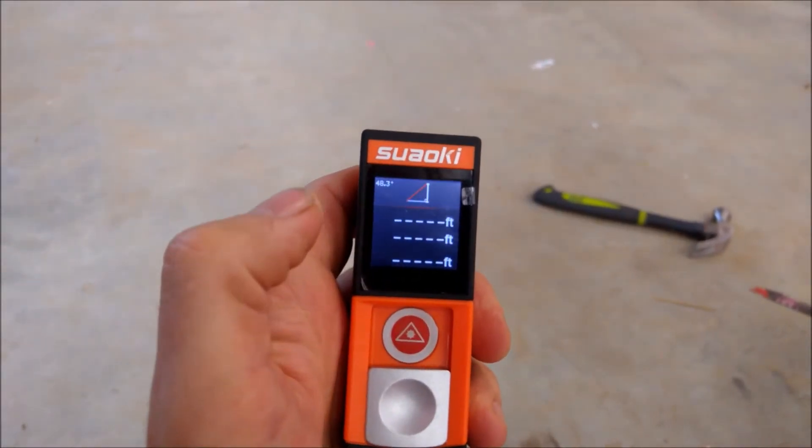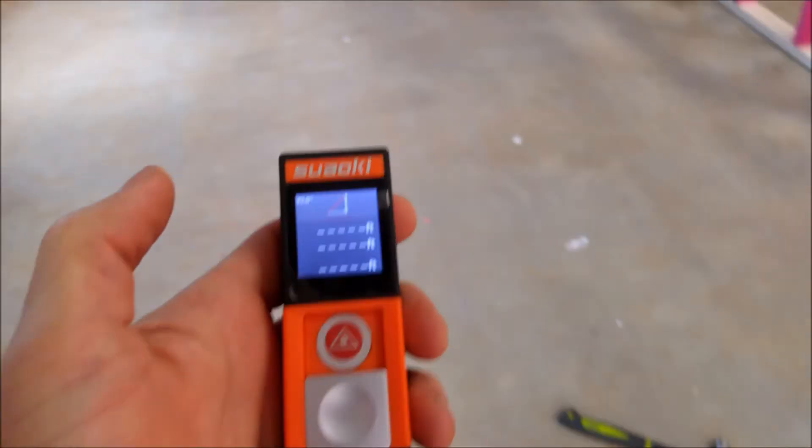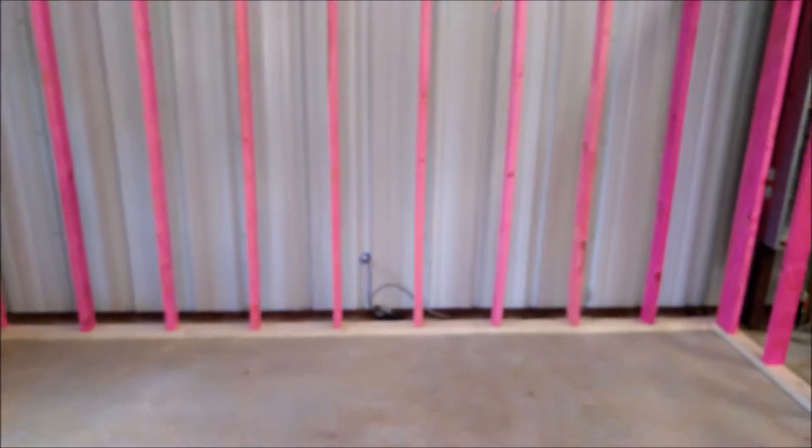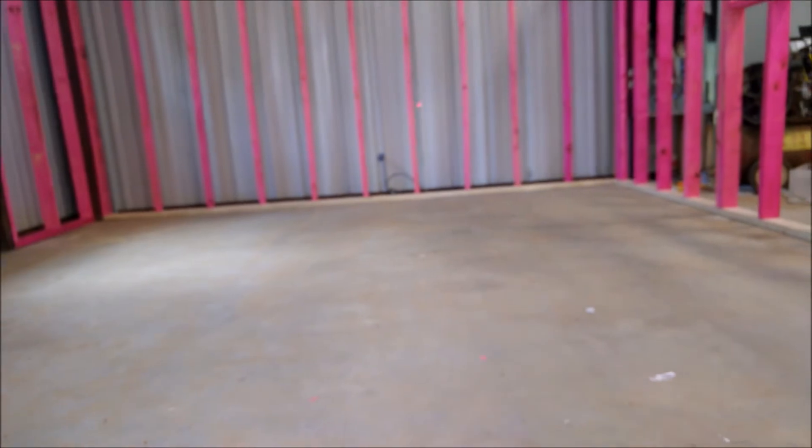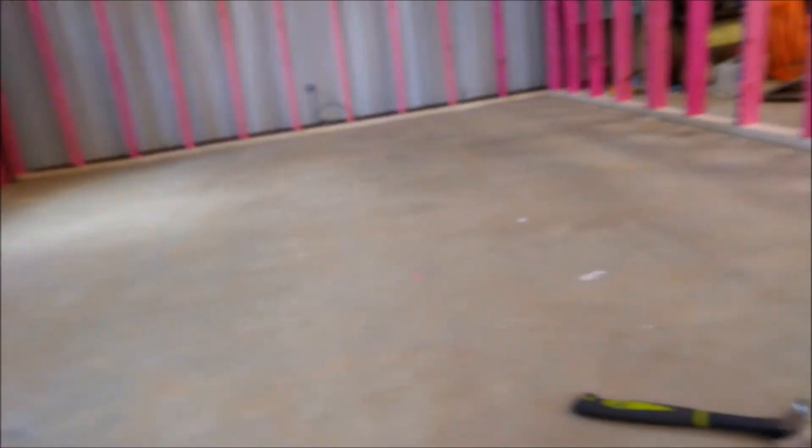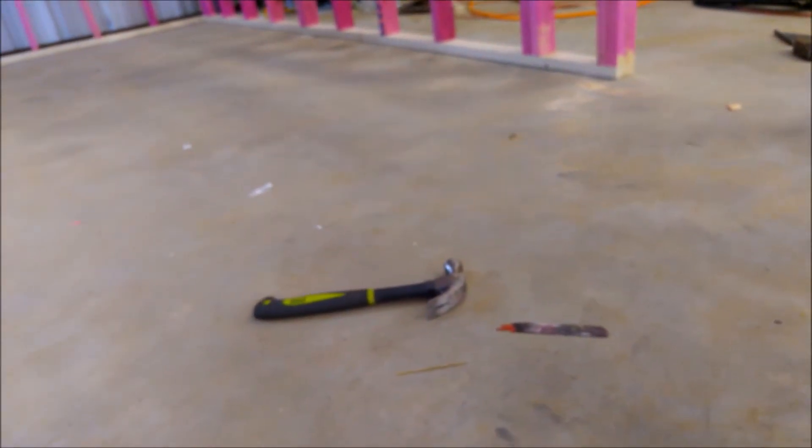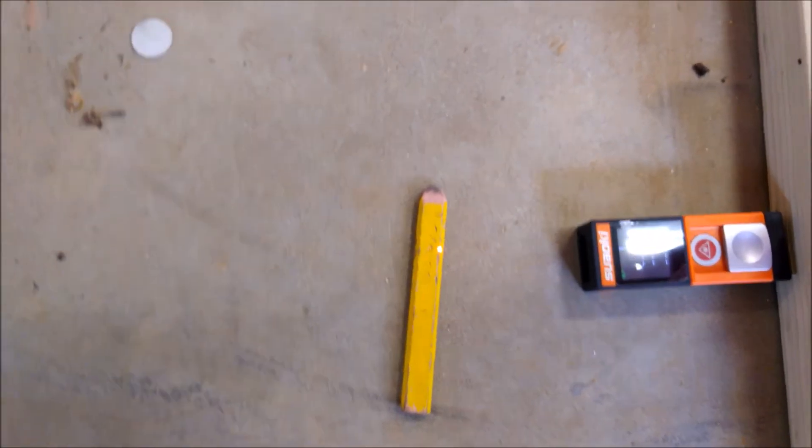I'm going to do the height measurement using the Pythagorean theorem. Basically, I've got some marks here at 3, 4, 5, 6, and 7 feet. And then come over here to the other wall at a fixed point. I'm going to point it first at the baseboard and then up at each one of those points, and it'll calculate out the height at each one of those points. We'll see how accurate it is.